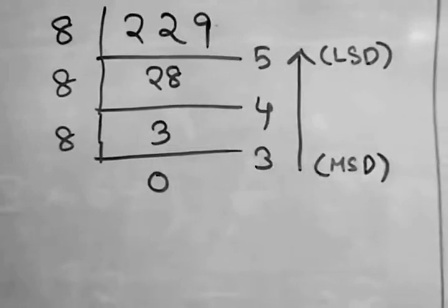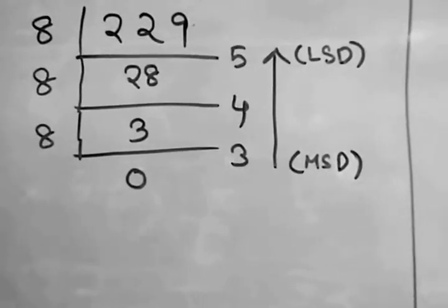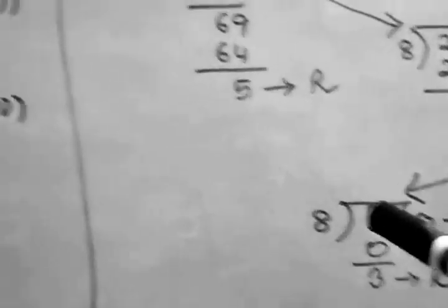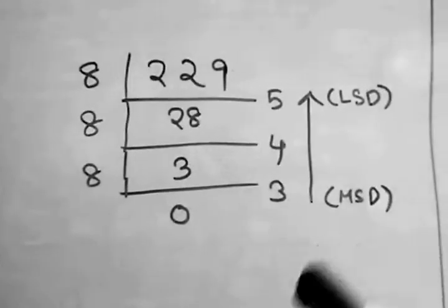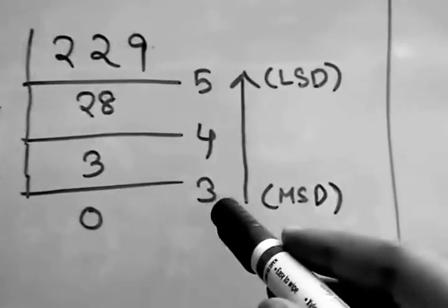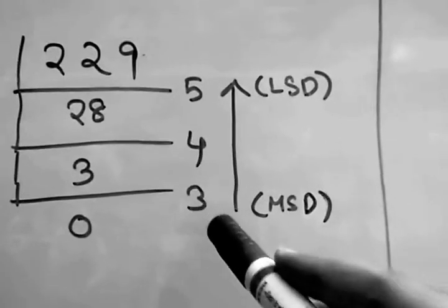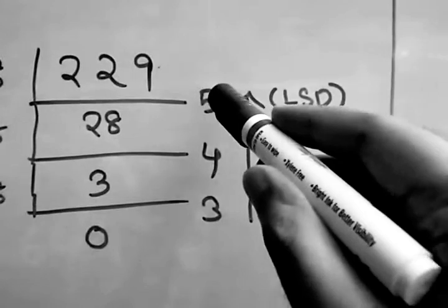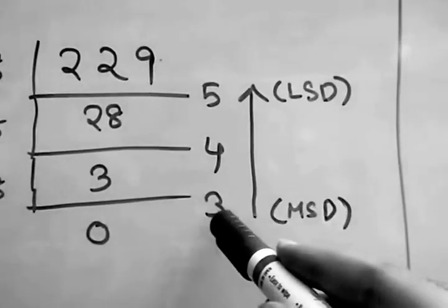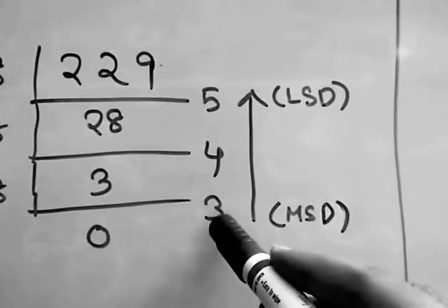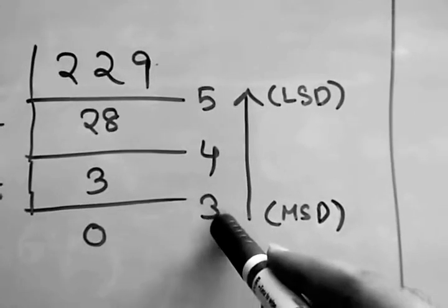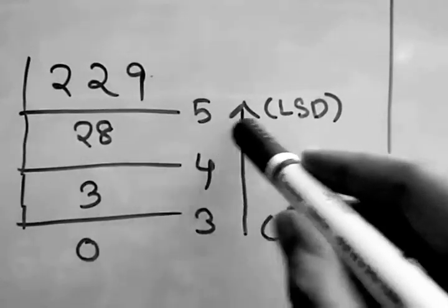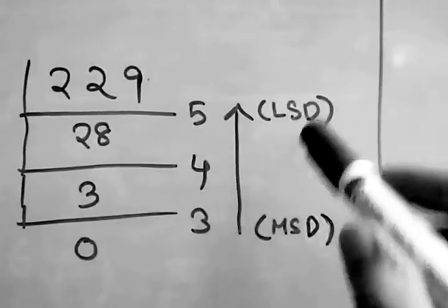Whenever we get quotient 0, we will stop the process, just like in binary. We know whenever we get quotient 0, we stop the entire process. So leaving this 0, we start from this 3 and move towards the first remainder. First remainder was 5, and this is the last remainder, 3. So this is considered as most significant digit, and 5 is considered as least significant digit.